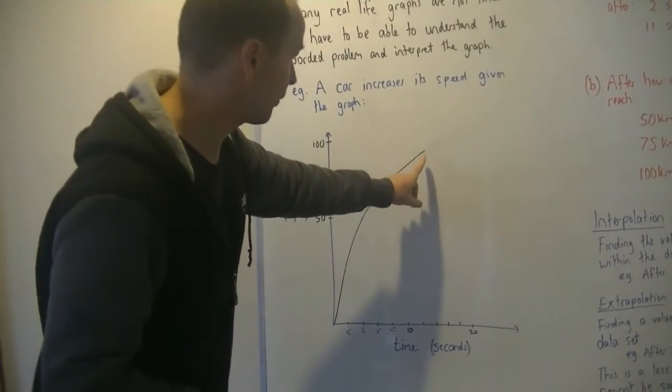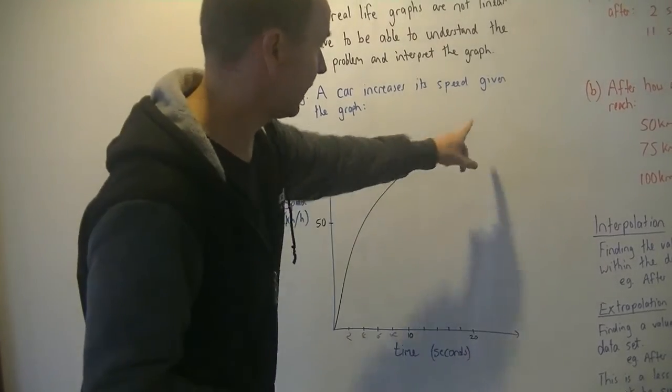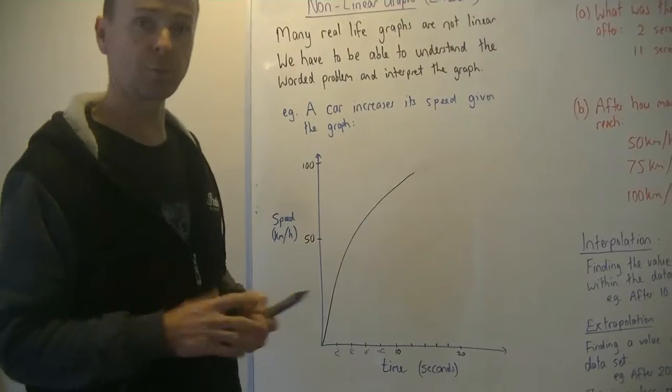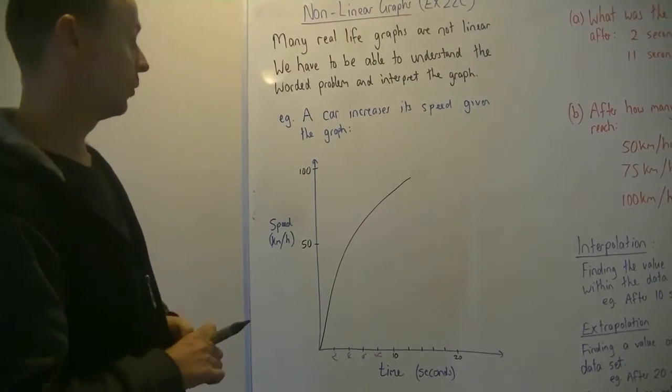And you'll notice it stops here, so the graph doesn't continue along there. So past this graph we have to sort of estimate or predict what the graph is going to do. We'll talk about that in a second.